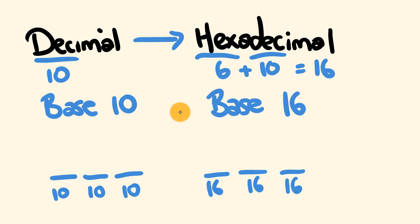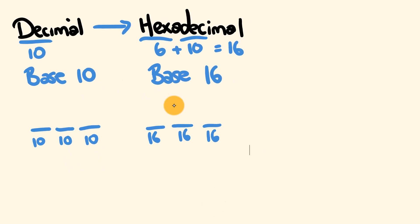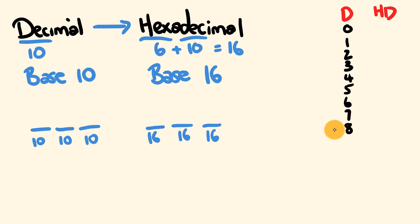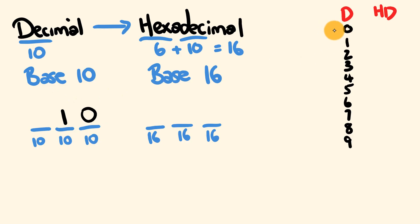Let's compare the digits used in decimal versus hexadecimal. Decimal uses 0, 1, 2, 3, 4, 5, 6, 7, 8, 9 — those are the 10 digits, 0 through 9. When you reach 10, you place a 0 and carry a 1 to the tens place.